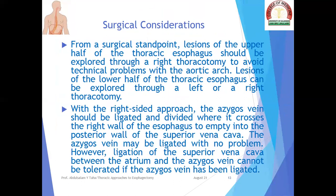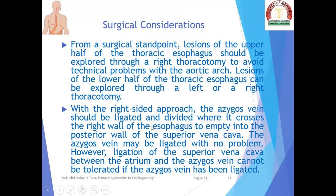From a surgical standpoint, lesions of the upper half of the thoracic esophagus should be explored through a right thoracotomy to avoid technical problems with the aortic arch, while lesions of the lower half can be explored through a left or right thoracotomy. With the right-sided approach, the azygous vein should be ligated and divided where it crosses the right wall of the esophagus to empty into the posterior wall of the superior vena cava. Ligation of the azygous vein has no ill effects.